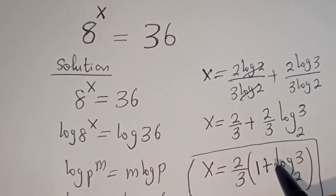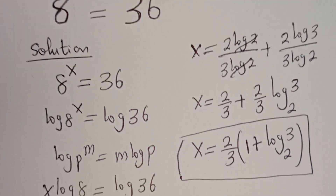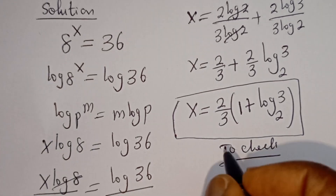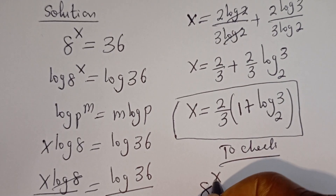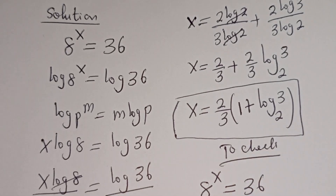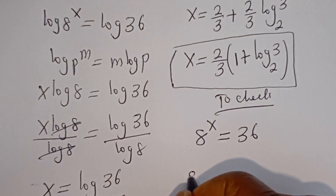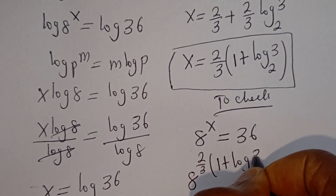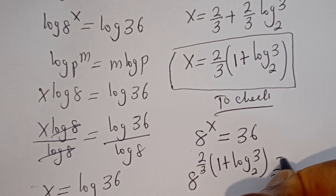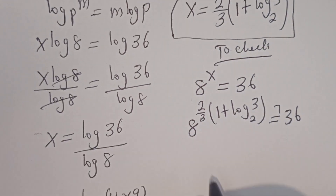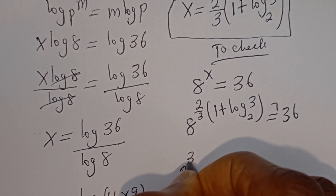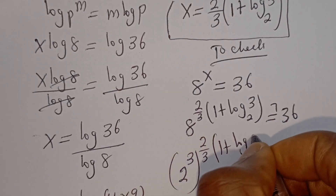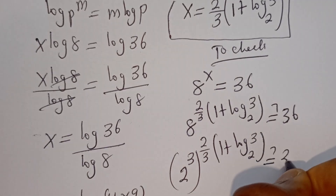You can check to confirm if this answer is right. To check, we have the given equation 8 to the power of x is equal to 36. Then here we have 8 to the power of 2 over 3 bracket 1 plus log 3 base 2, must be equal to 36. This can be written as 2 to the power of 3, to the power of 2 over 3 bracket 1 plus log 3 base 2, must be equal to 36.